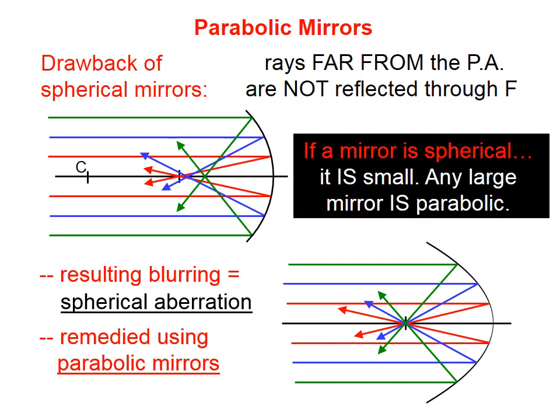If a mirror is spherical, it is small. Any large mirror is parabolic.